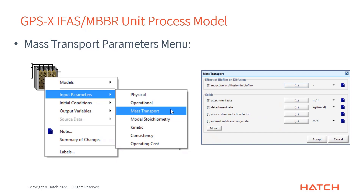Moving on to the third menu: mass transport. This is the last menu specific to GPSX biofilm units. It covers attachment rate, detachment rate, shear factors, and external solids exchange rate — essentially the parameters for all those processes I mentioned earlier. I recommend not bothering to change any of these; we've worked out really good values over the years. Unless you have a very unusual biofilm, these numbers will work well for you.